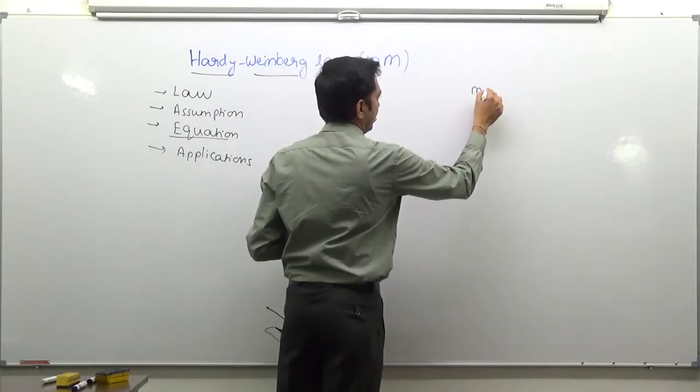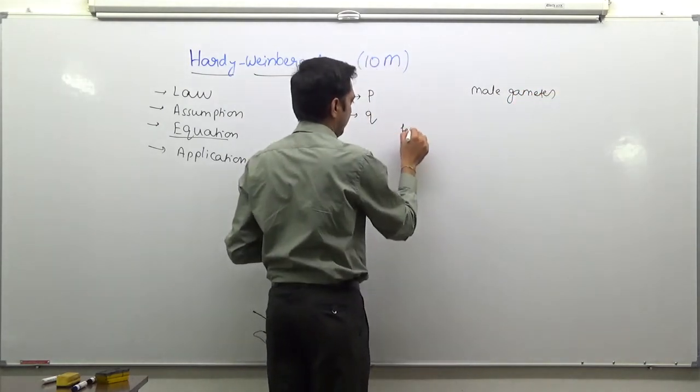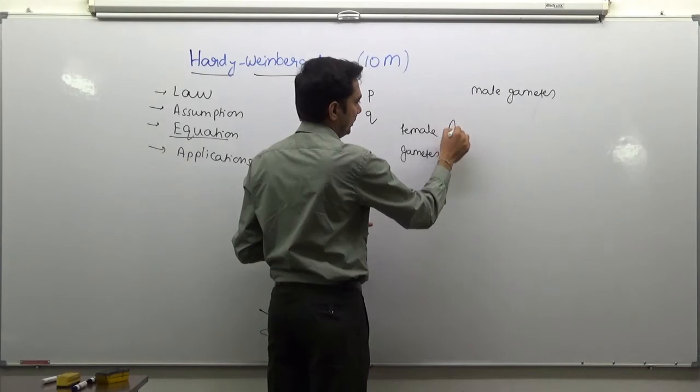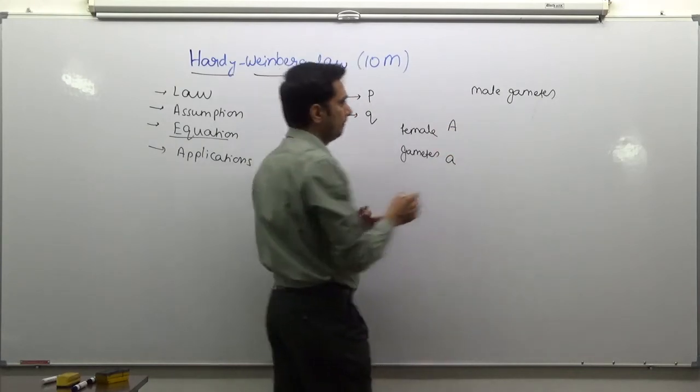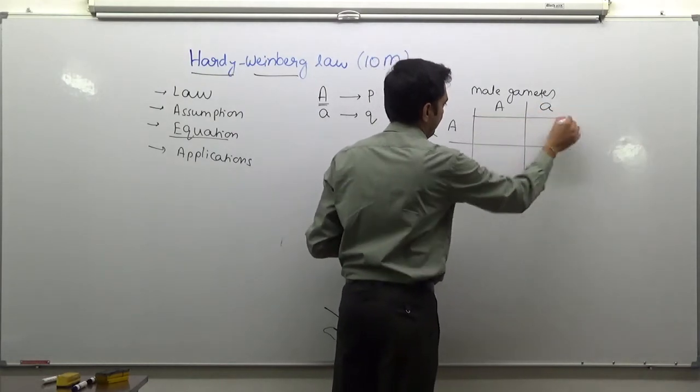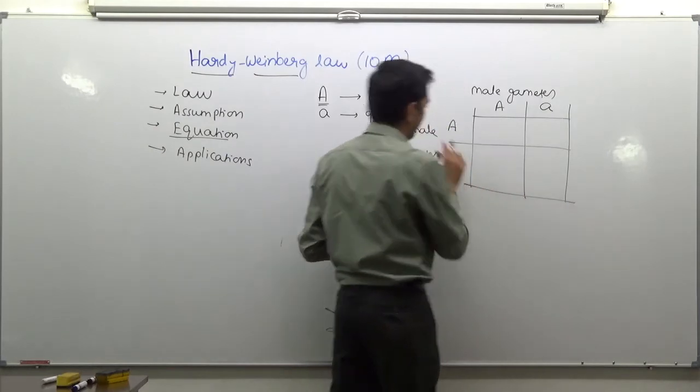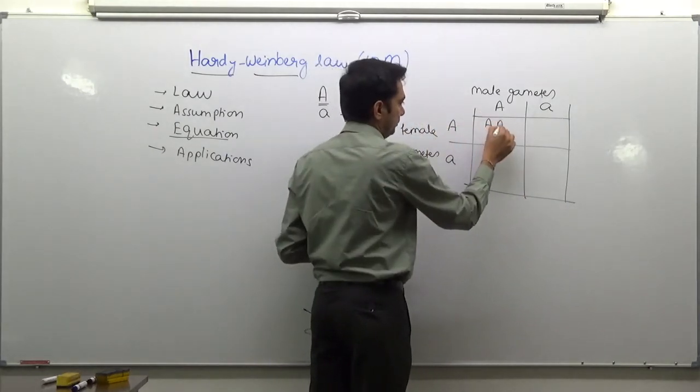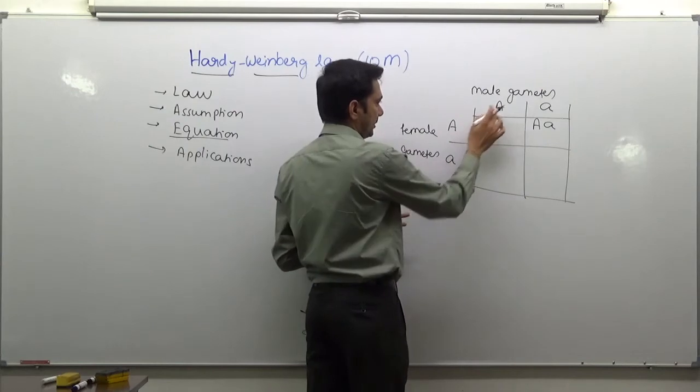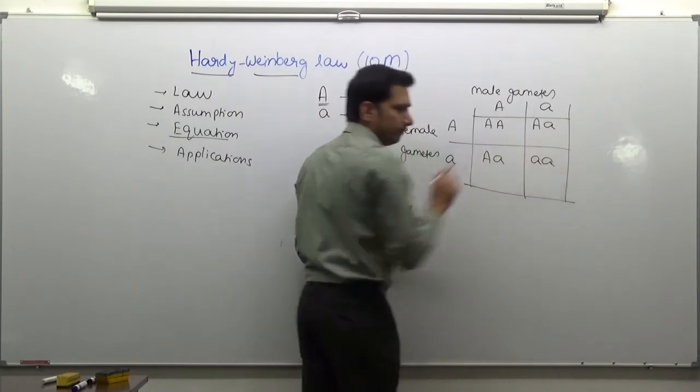If you say that these are male gametes and female gametes in average population, there are two possibilities capital A and small a, and capital A and small a. The combination between capital A and capital A gives rise to a genotype like this, and combination between capital A and small a, and combination between capital A and small a again, and the combination between small a and small a.